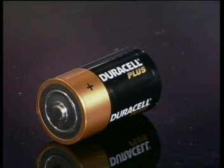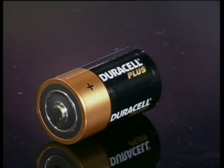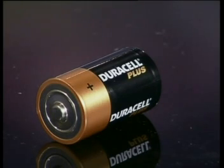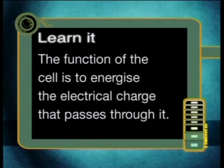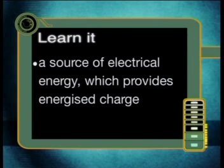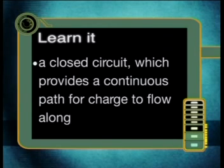Let's see how this compares to the torch cell in our electrical circuit. The torch cell acts as the source of electrical energy and replaces the energy of the charge carriers as they pass through it. The torch cell pumps out energized charges at the positive terminal and receives unenergetic charges at the negative terminal. Therefore, the function of the cell is to energize the electrical charge that passes through it. To maintain a current in a conductor, the following is needed: a source of electrical energy which provides energized charge, and a closed circuit which provides a continuous path for charge to flow along.